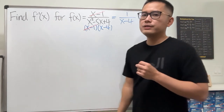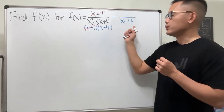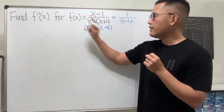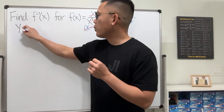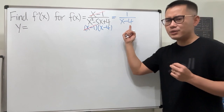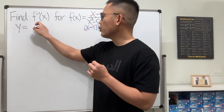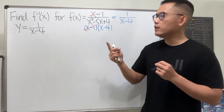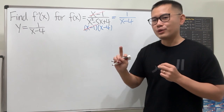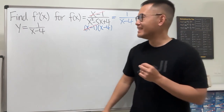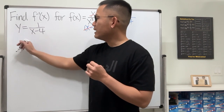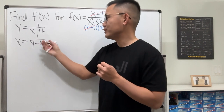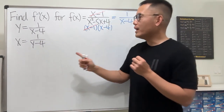To find the inverse, we look at f(x) equal to 1 over (x minus 4) and use the four-step process. Step one: write f(x) as y, so y equals 1 over (x minus 4). Step two: interchange x and y — when you see y it becomes x, and when you see x it becomes y.